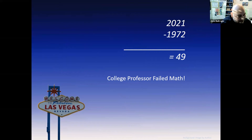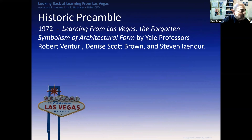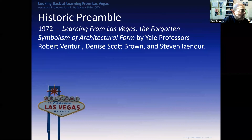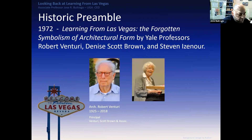The historic preamble: this book was published back in 1972. The title was Learning from Las Vegas: The Forgotten Symbolism of Architectural Form, by then Yale professors Robert Venturi, Denise Scott Brown, and Steve Izenour. Unfortunately, Mr. Venturi passed away recently. He was the principal of Venturi Scott Brown Associates.